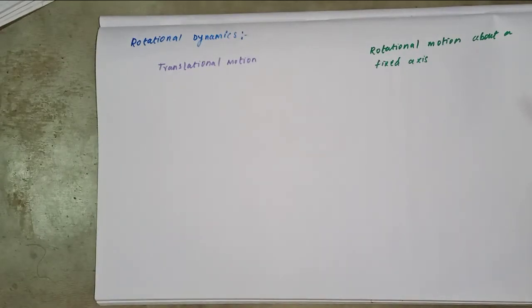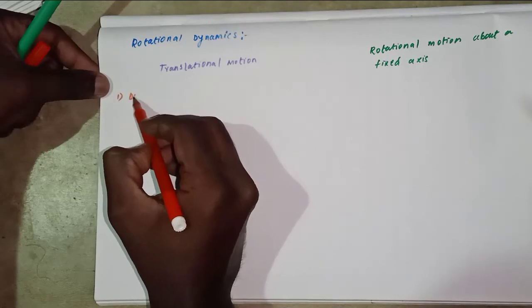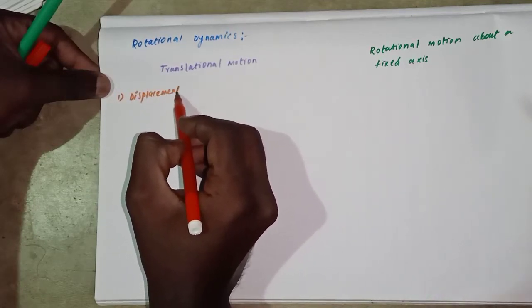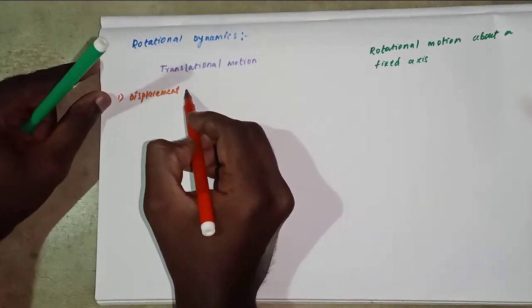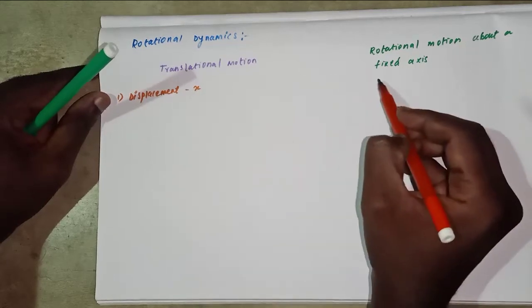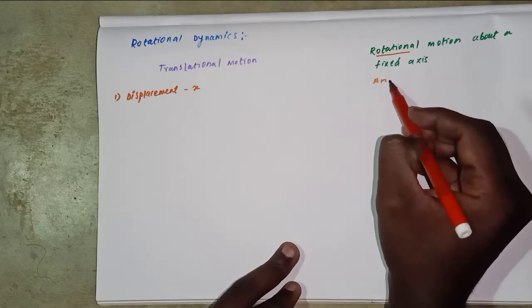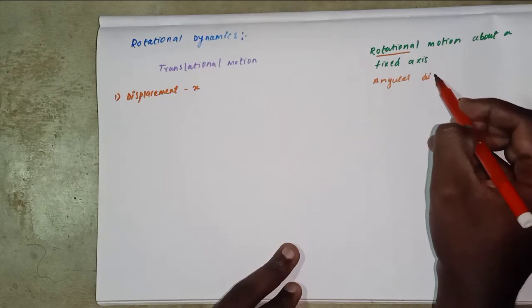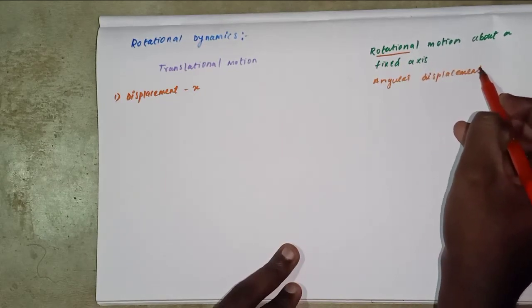Now the first one is displacement. Translational motion: displacement x. Rotational: angular displacement theta.